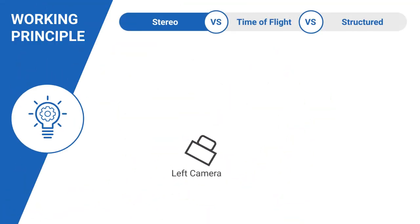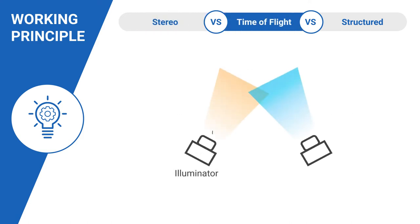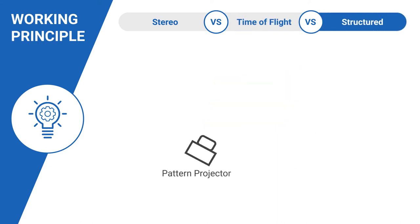Stereo Vision works by comparing disparities in images from two 2D sensors, whereas a time-of-flight camera measures depth based on the time taken by the light from the source to travel to the target object. In Structured Light, depth is calculated by analyzing distortions of illuminated patterns on the 3D surface.